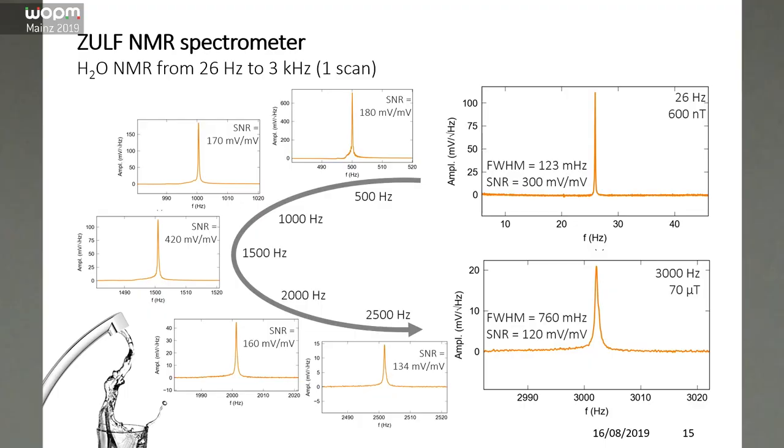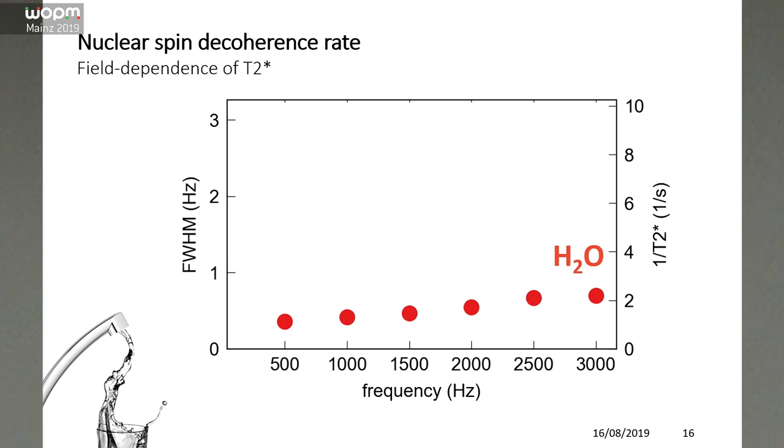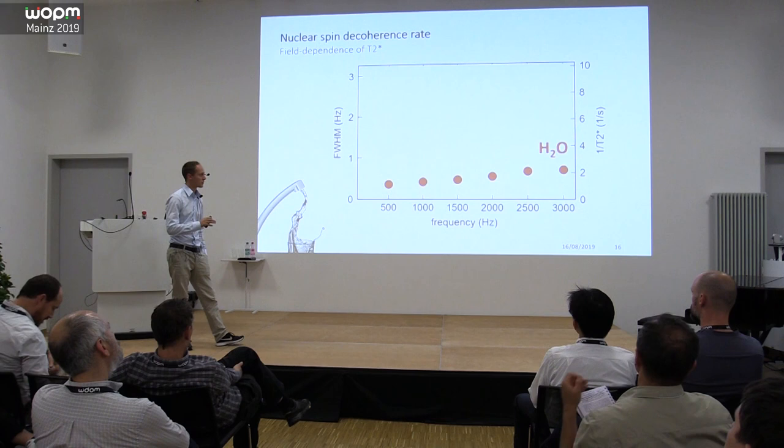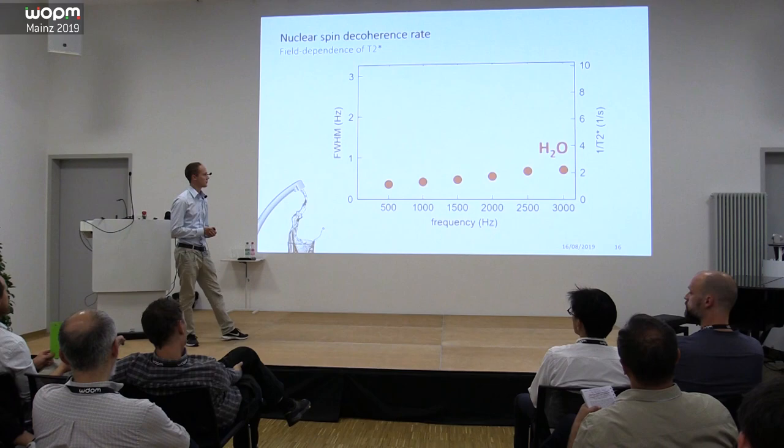And we see that we have an increase in line width due to the gradient. If you just plot the line width for each of the curves, we see that there's a slight increase of the line width. It is still below one hertz, but it's definitely there. We can correct it by applying additional gradients that will only slightly decrease the sensitivity of our magnetometer because it's not so sensitive to gradients.